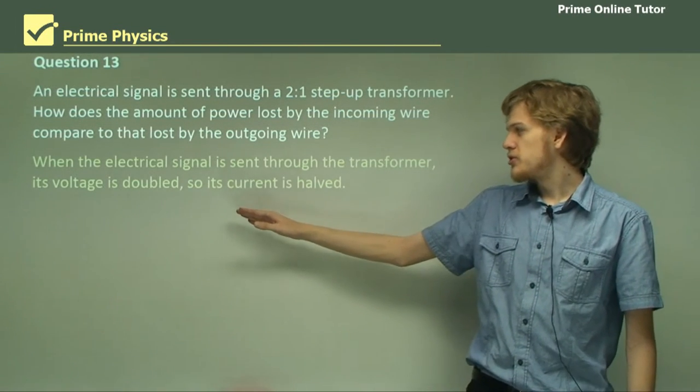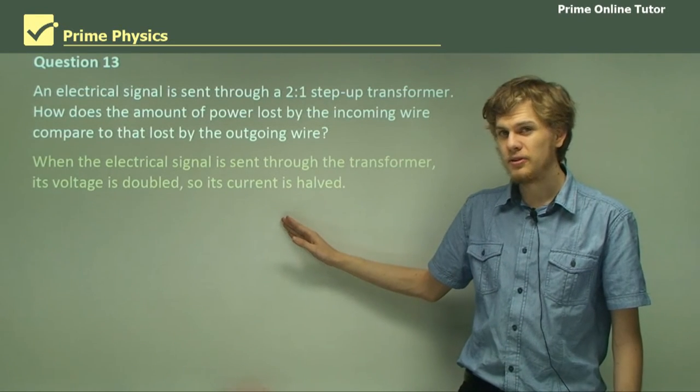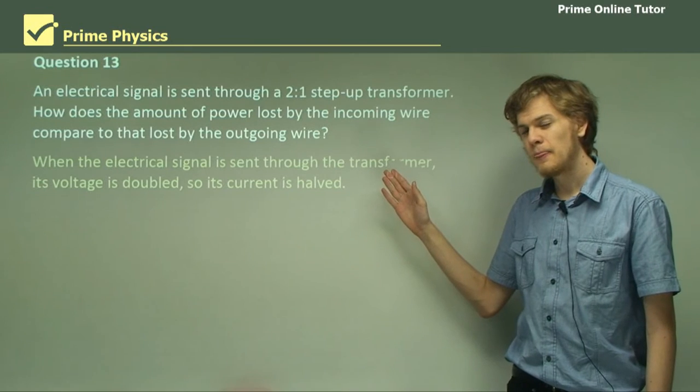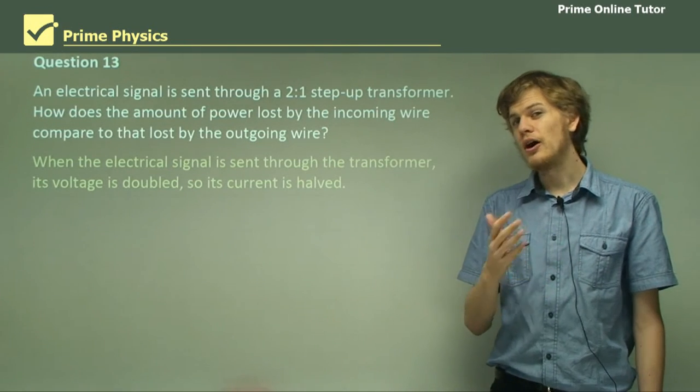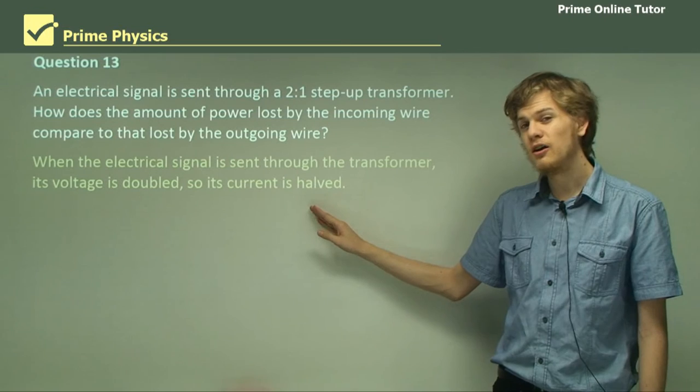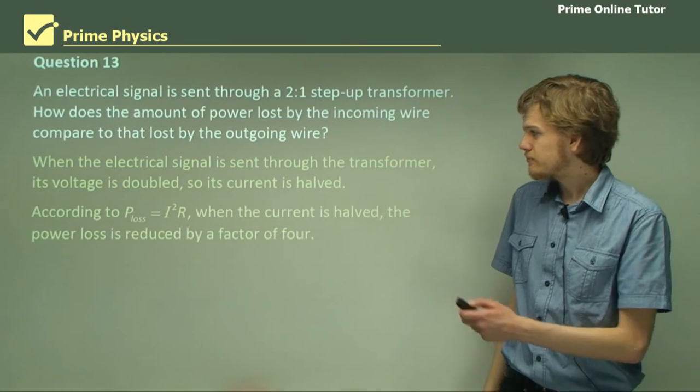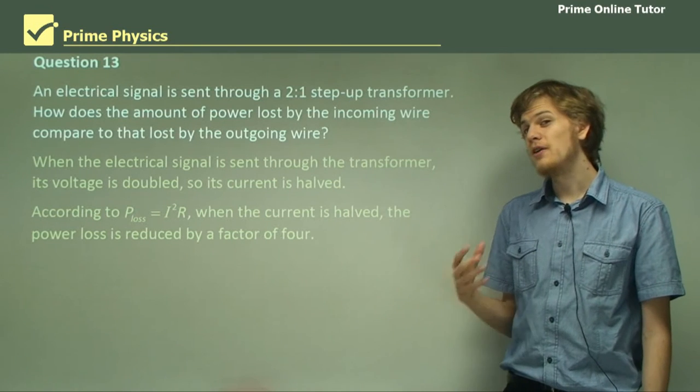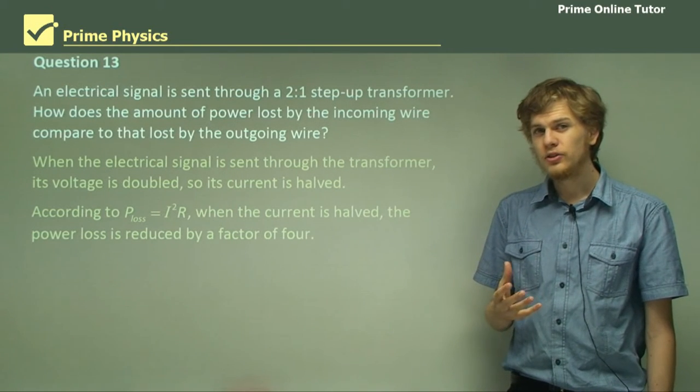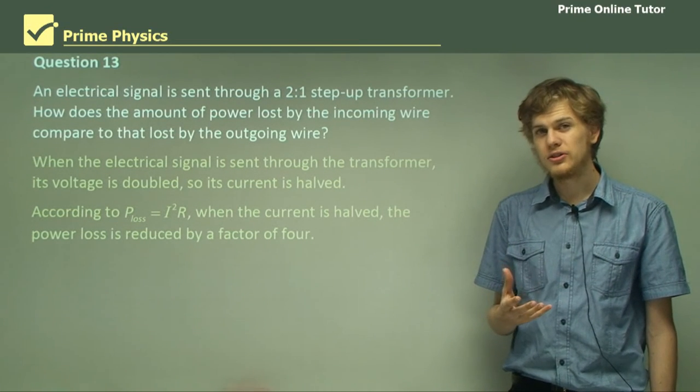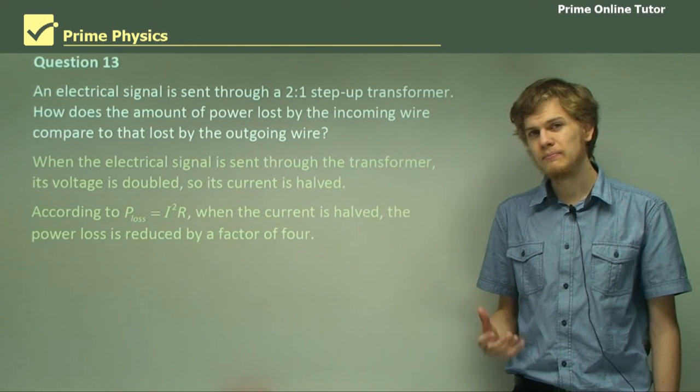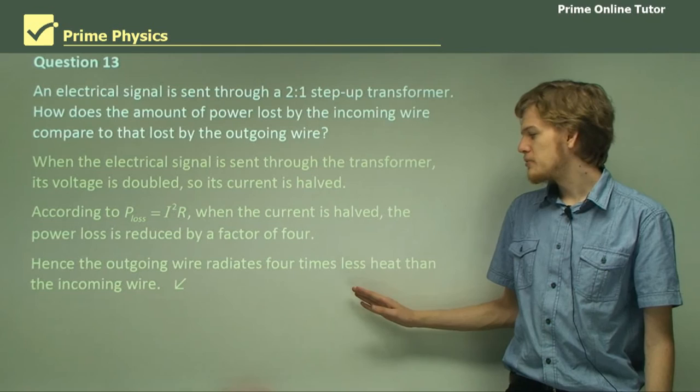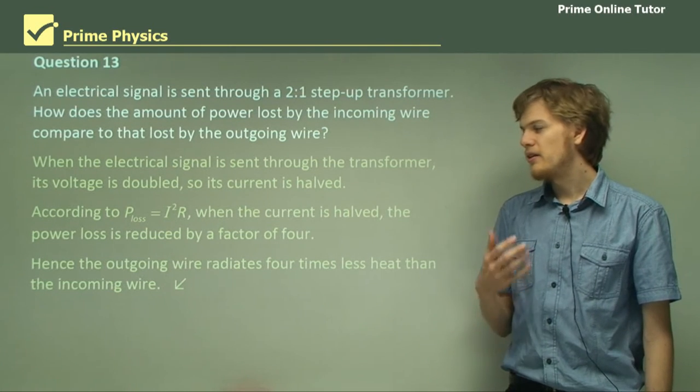So the voltage is doubled and its current is halved. What will halving the current do to the power loss? Well, power loss equals I squared R, and I has been halved. So when the current is halved, the power loss is reduced by a factor of 4. So the lost power is much lower in the secondary wire than in the primary. The outgoing wire radiates 4 times less heat than the incoming wire.